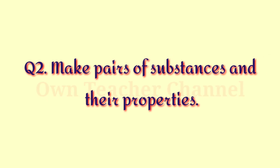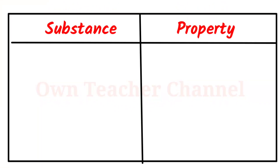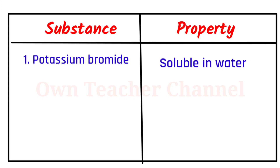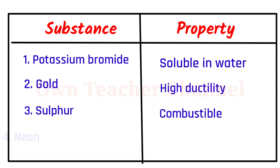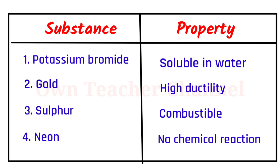Question 2: Make pairs of substances and their properties. Potassium bromide — soluble in water. Gold — high ductility. Sulfur — combustible. Neon — no chemical reaction.